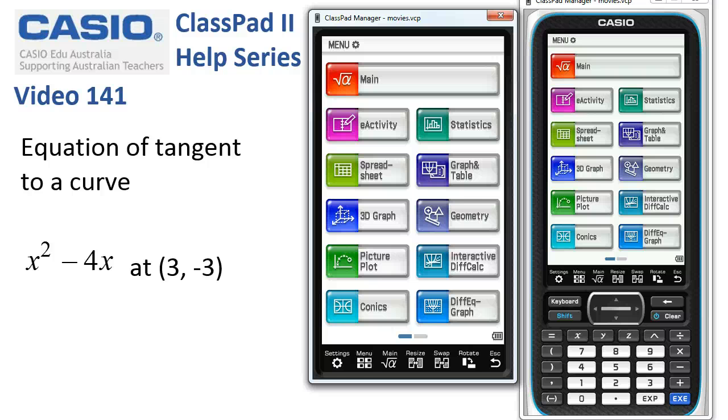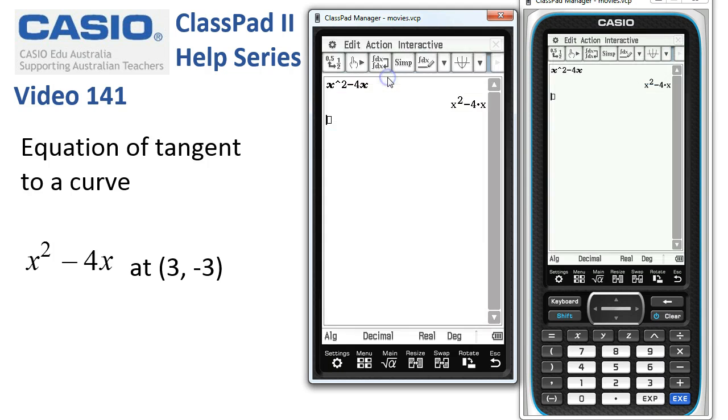Finding the equation of a tangent to a curve. We'll start in main and here's our quadratic, and we want the equation of the tangent at the point (3, -3).